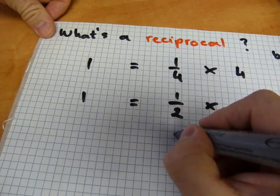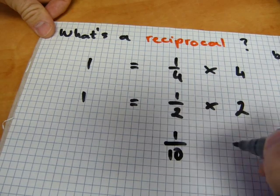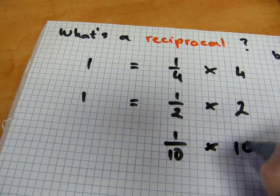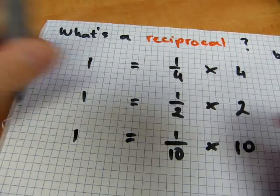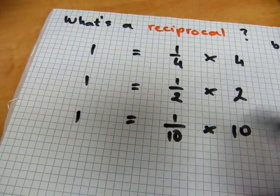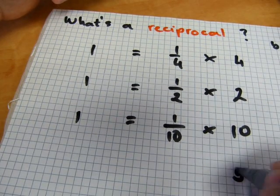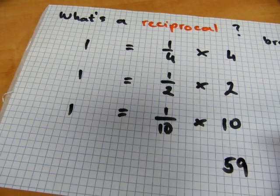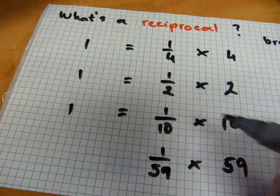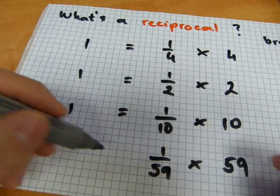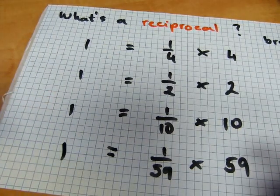Same works with a tenth. The reciprocal of a tenth is ten, because ten tenths make one. Or, what's the reciprocal of fifty-nine? The reciprocal of fifty-nine is one over fifty-nine, one fifty-ninth. Because fifty-nine fifty-ninths will make one.